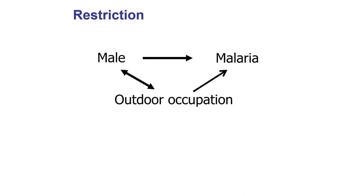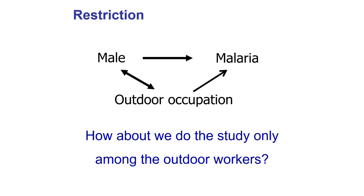Recall the example from the confounding part one presentation: an association was found between being male and malaria, but outdoor occupation was a potential confounder mixing with the effect of gender and showing a positive association. There was actually no relationship between male gender and malaria — it was outdoor occupation causing the effect. In terms of restriction, we could restrict the study to only outdoor workers to eliminate the mixing effect of occupation and gender on malaria.